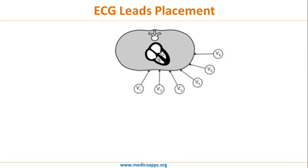First, we will look at the chest leads. Leads V1 to V6 are also called the precordial leads or chest leads. In cross section, it is easy to understand that leads V1 and V2 record the electrical activity of the septal part of the heart, and leads V3 and V4 record the electrical activity of the anterior part of the heart.